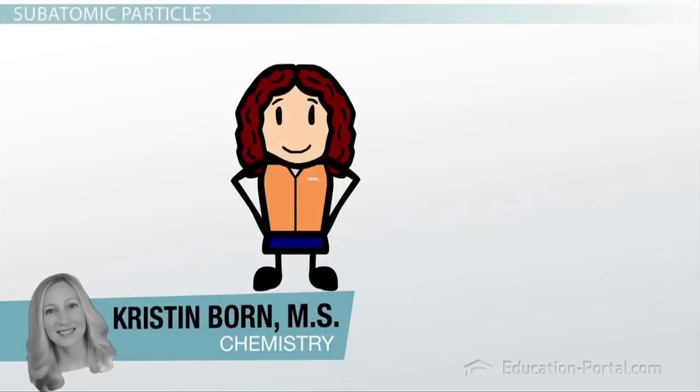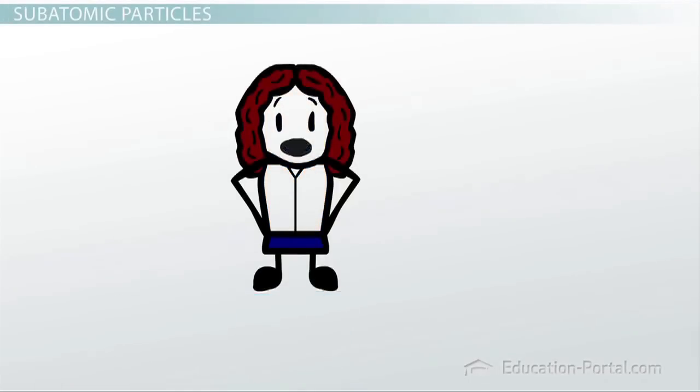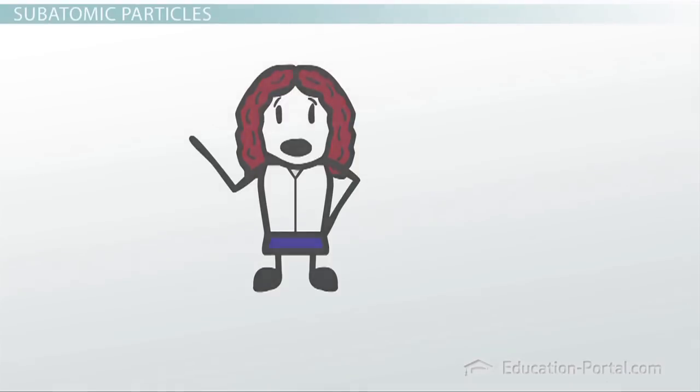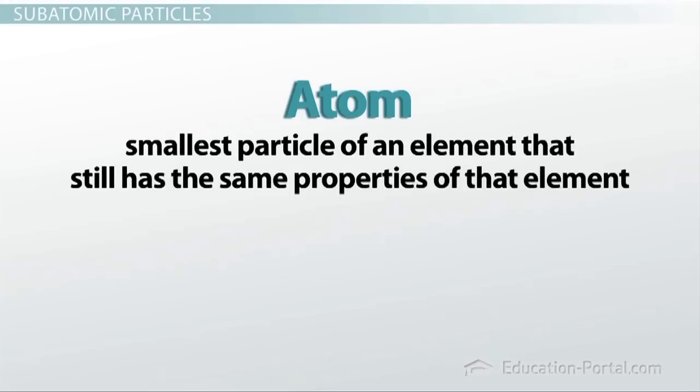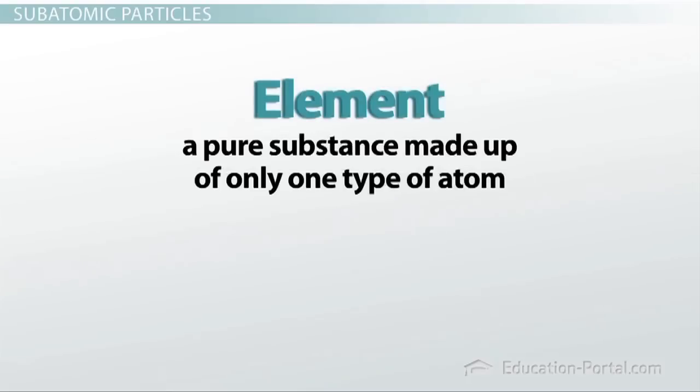Did you know that you are made up of mostly empty space? That is not meant to be an insult, more of an example of how you are made up of atoms and most of the volume of an atom is completely empty space. An atom is the smallest particle of an element that still has the same properties of that element. Remember that an element is a pure substance made up of only one type of atom.